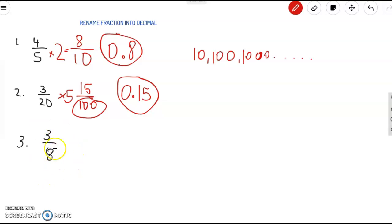Now for a tricky one. 3 over 8. Well, 8 does not go into any of the powers of 10 evenly. So we're just going to have to divide. 3 divided by 8. So go ahead and pause this video and try it on your own. And let's see what we get. Awesome.